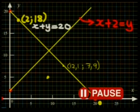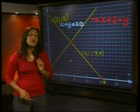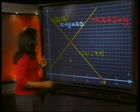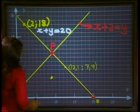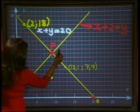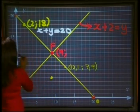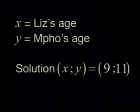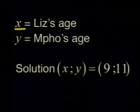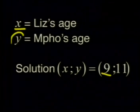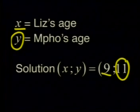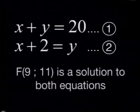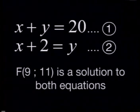What point lies on both lines? It is the point of intersection of the two lines — that is the solution to our system of equations. Let's call this point F. Reading off the values, we get X equals 9 and Y equals 11. This shows us that Liz's age, which was X, is 9, and Mpo's age, which was Y, is 11. So the solution to our system of equations is the point F (9, 11), since it satisfies both equations.